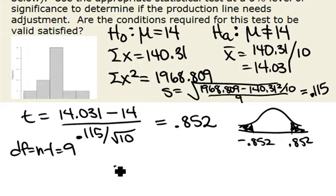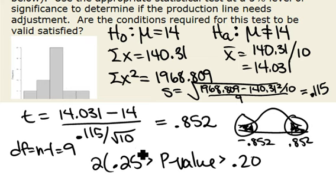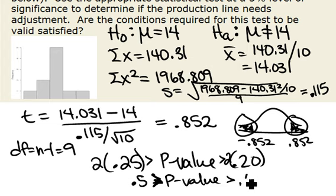When we get our p-value, we need to pay attention to the type of test we're doing. We have 0.25 and 0.2, but we want to take the area in both tails because we're doing a two-tailed test. So we're going to multiply these by two, and what we'll find is that our p-value is between 0.4 and 0.5.